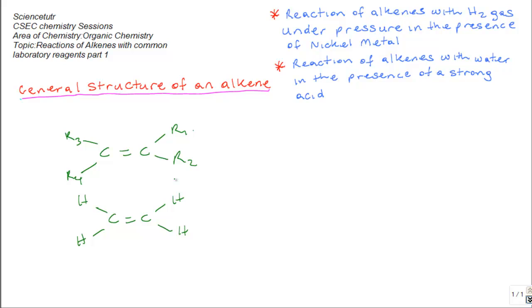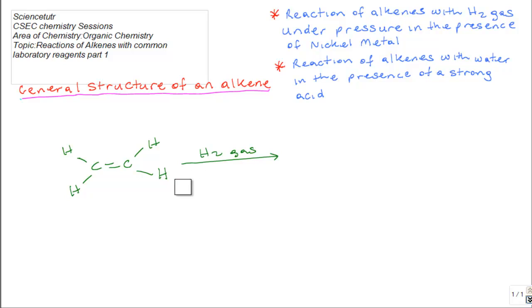For simplicity, we're going to use ethane as an example. Ethane reacts with hydrogen gas under pressure in the presence of nickel metal. The reaction of ethane is done with hydrogen gas under pressure at 150 degrees Celsius.